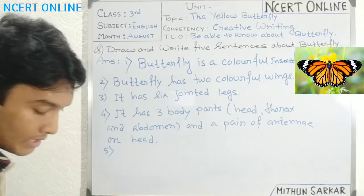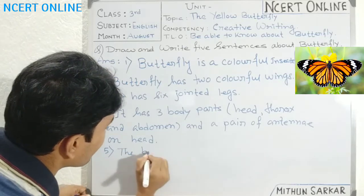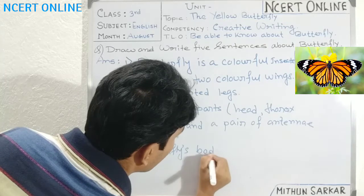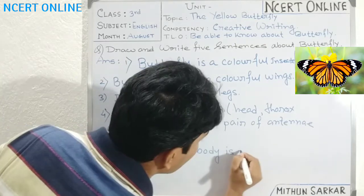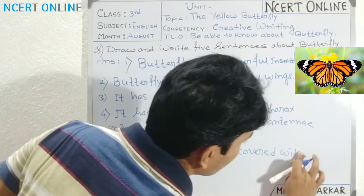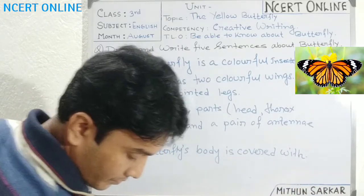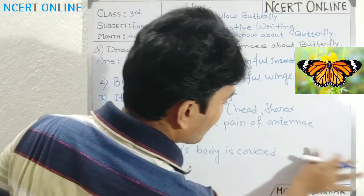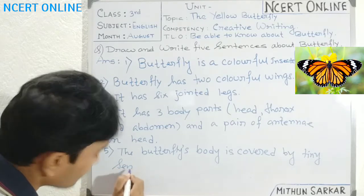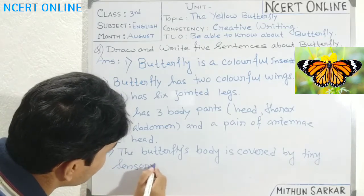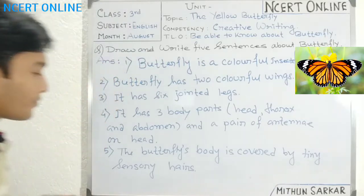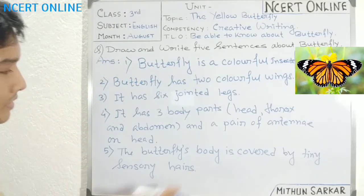Then number 5 we can write: The butterfly's body is covered by very small sensory hairs all over the body. Note down it properly.